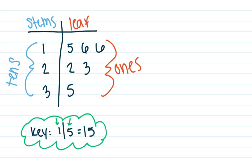Sometimes the key will tell you something different. Maybe the key, instead of saying that this was 1, 5 is 15, maybe the key said that 1, 5 is actually going to be 105. Again, the leaves would still be 1s, but then that changes what the stems are. The stems would then be 100s. So again, it changes based on your key.